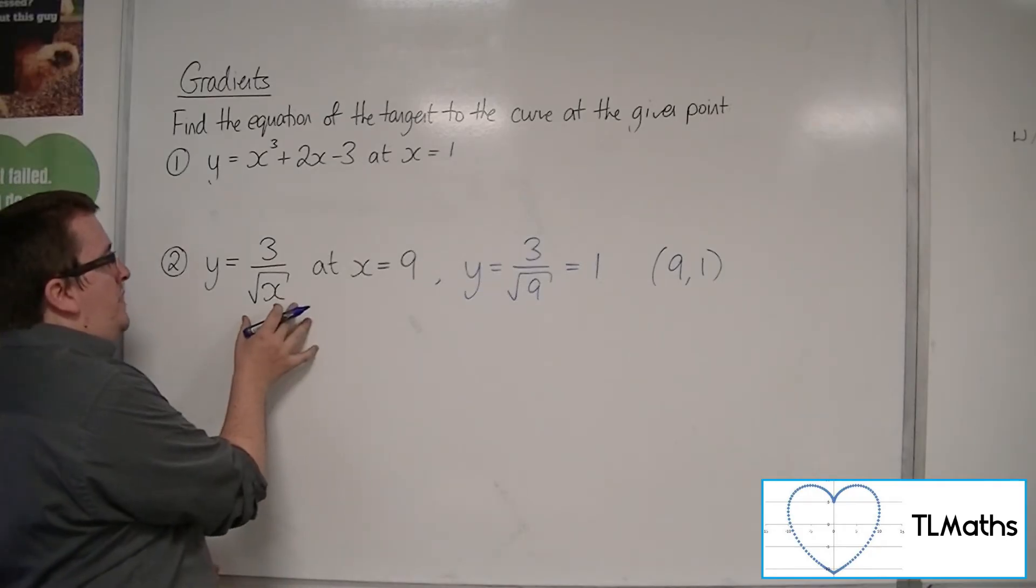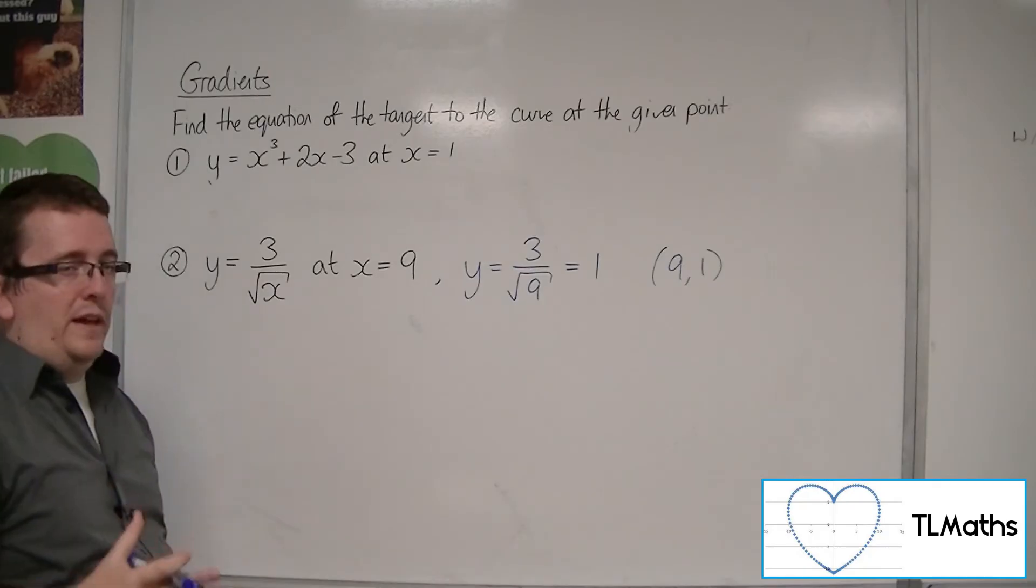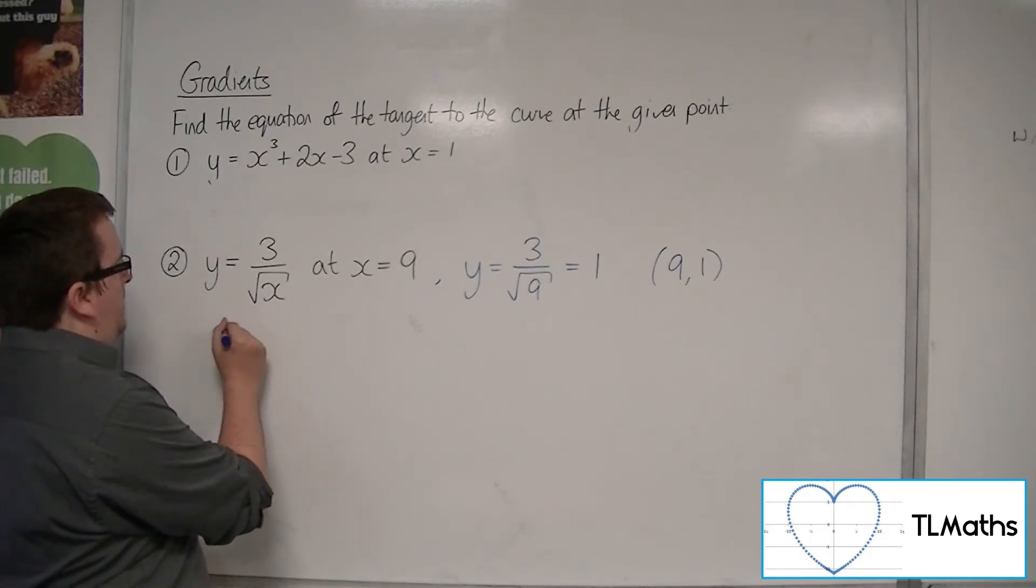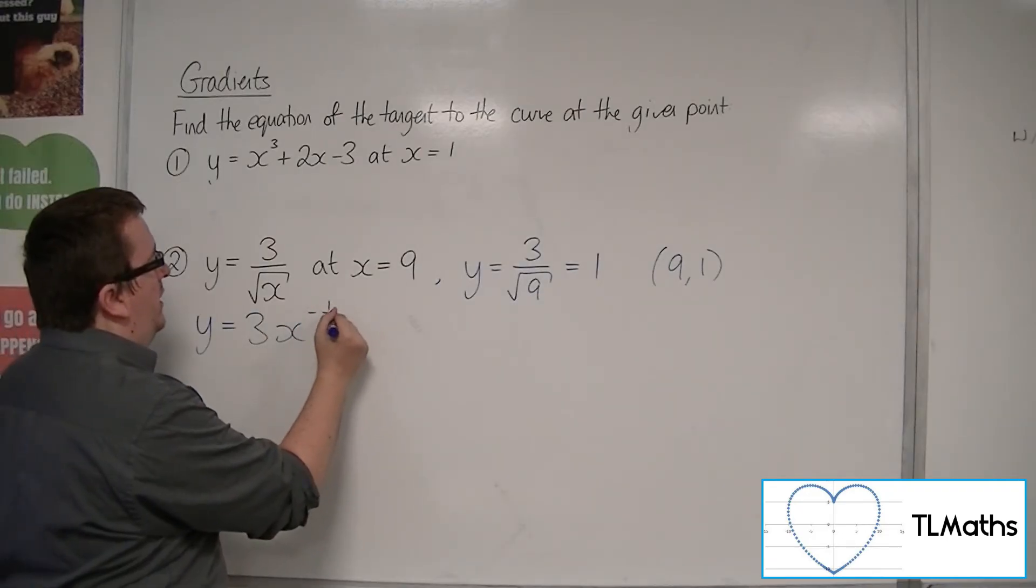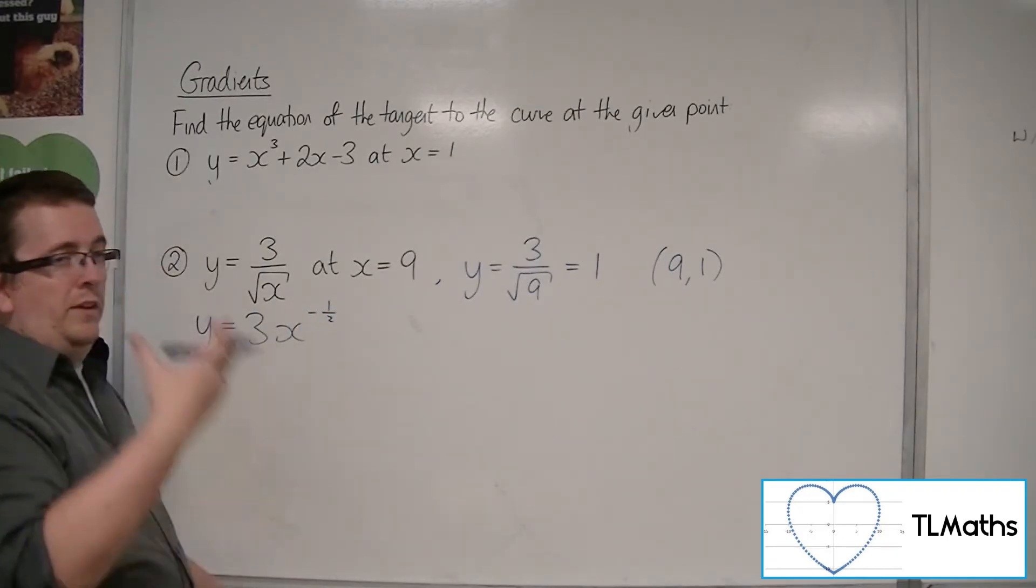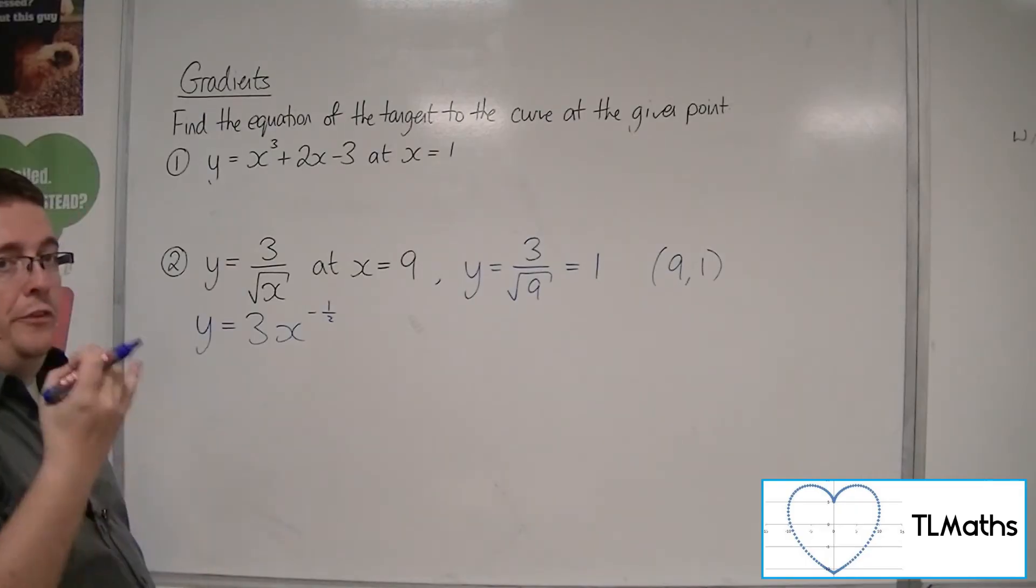Now we need to find the gradient function. We need to differentiate this. In its current form, I can't do that. So I want to rewrite it as 3 lots of x to the minus 1 half. The minus gives you the 1 over. The half is the square root.